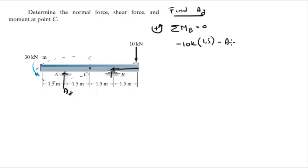Minus AY times 3, which is the distance between A and B, plus this moment right here which is going counterclockwise, which is 30 kN·m, and all of this is equal to zero. So when you solve for AY, you get that AY is equal to 5 kilonewtons.